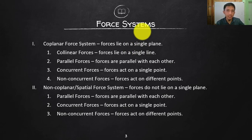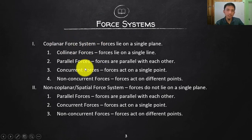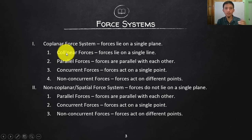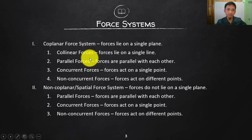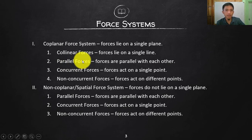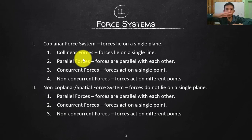Coplanar forces are also called 2D, or two-dimensional, since they lie on a single plane. Under this category we have four subtypes. The first is collinear forces — forces that lie on a single line. The first and second forces have their line of action on a single line. The second subtype is parallel forces — they are parallel but do not coincide, so they are not collinear.